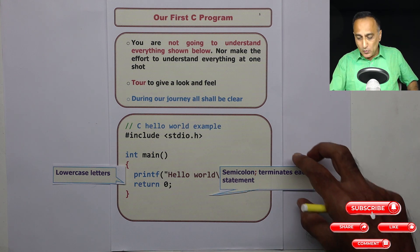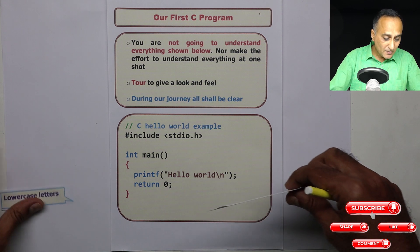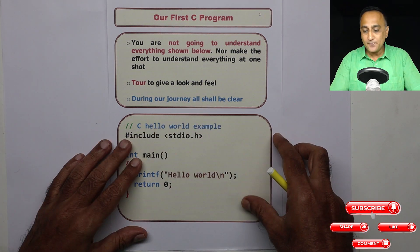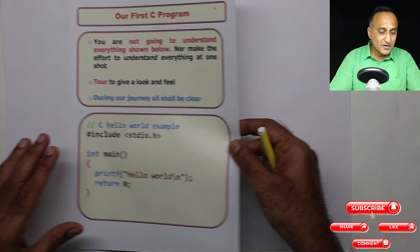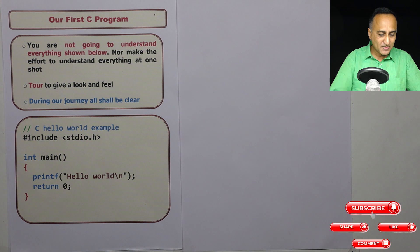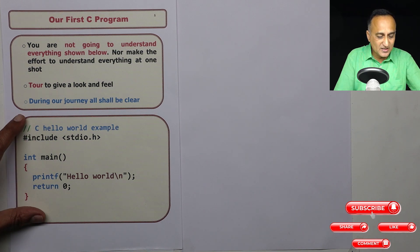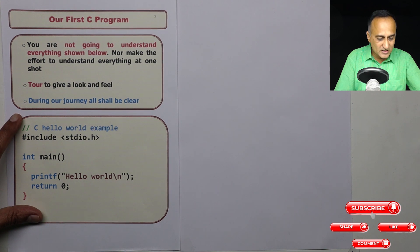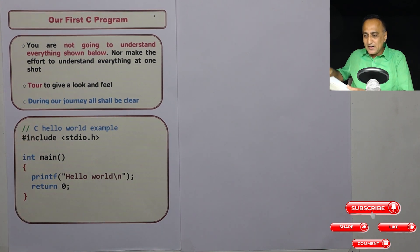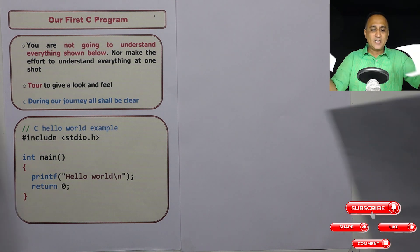Now you may have a very valid and genuine question: just to print a Hello World, we have to do so much. But the beauty of this is that even if you're writing a very complex piece of code, you will almost be doing the same thing. So the advantage of this particular structure is it tells you that even if you're writing an extremely complicated code, most of these things will continue to carry on.